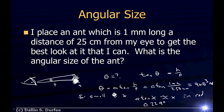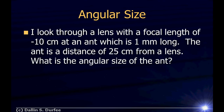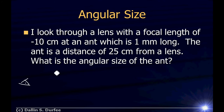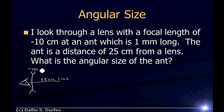Now I look through a lens with a focal length of negative 10 centimeters, and an ant which is 1 millimeter long is a distance of 25 centimeters from the lens. What is the angular size of the ant? Let's assume the lens is right up to my eye. The ant is 1 millimeter and 25 centimeters from the lens, which has a focal length of negative 10 centimeters.